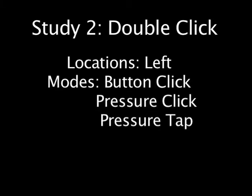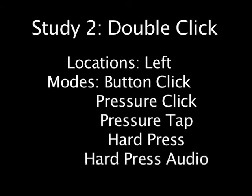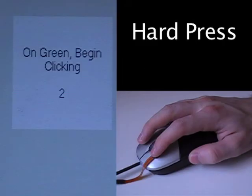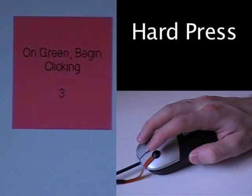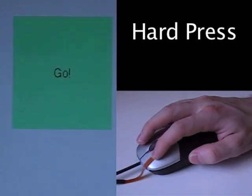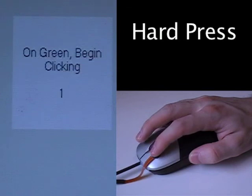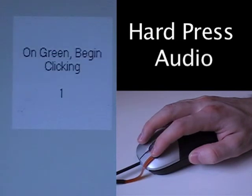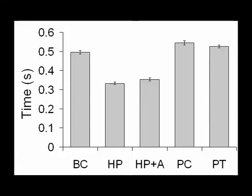For our second study, we tested users' ability to double click in the left mouse button location only. Carrying over the three most successful modes from our first study, we developed two additional modes to assist with double clicking. Hard press mode streamlines the double click process by taking advantage of the wide range of pressure values the sensor can detect. To double click in hard press mode, the user pushes down hard once, and a double click is activated. The hard press pressure level is calibrated for each user. We also create a hard press audio mode that plays clicking sounds to indicate a successful double click. Our results show that hard press performs very well, beating out the standard mouse button double click in speed.